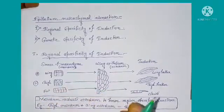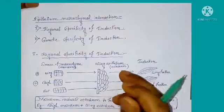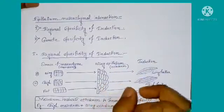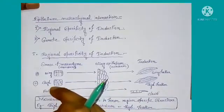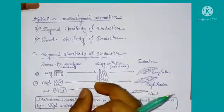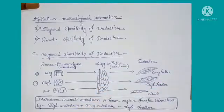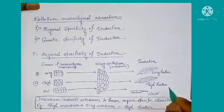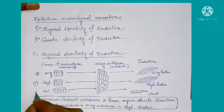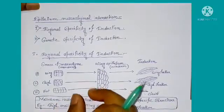In the second case, the mesenchymal tissue or mesoderm is collected from the thigh region of the chick, and the epithelium or ectoderm is collected from the wing region. Then the thigh mesenchymal cells are placed beneath the wing epithelium, and we see that thigh feather is developed.